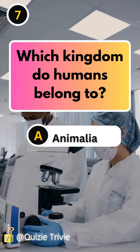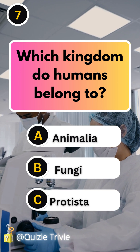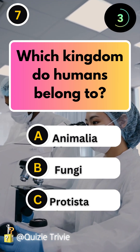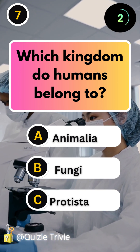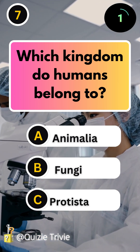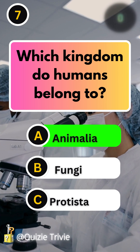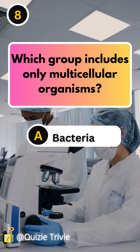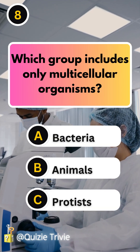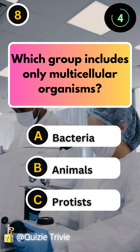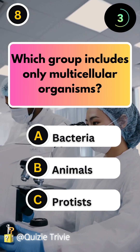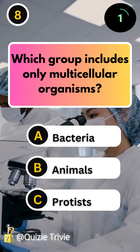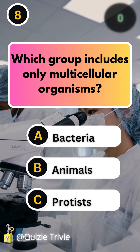Which kingdom do humans belong to? Animalia. Which group includes only multicellular organisms? Animals.